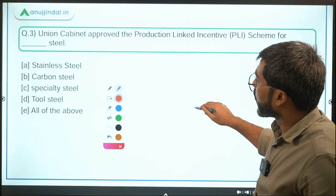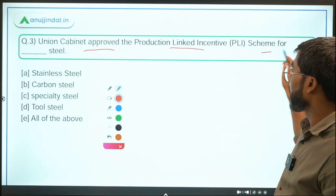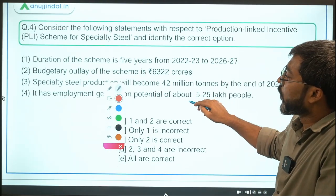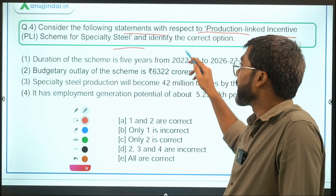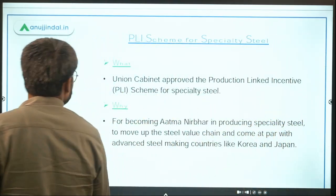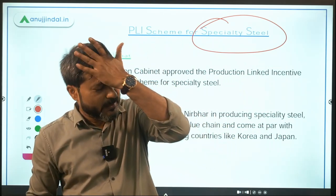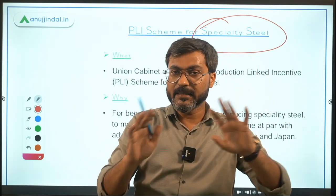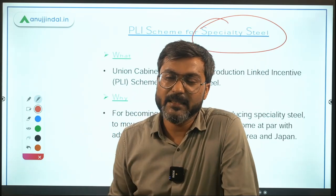Question number three and four are both based on the same news. Question three: the Union Cabinet approved the Production Linked Incentive scheme for what type of steel? And question four considers statements with respect to the PLI scheme for speciality steel. Now, what is speciality steel? Speciality steel is essentially value-added steel where a normal steel is provided with some kind of coating or treatment.